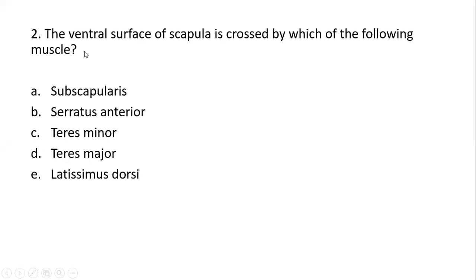The second question related with the scapula is: the ventral surface of the scapula is crossed by which of the following muscles? In this question you need to pay attention to the attachments over the ventral and dorsal surfaces of the scapula. The ventral surface of the scapula is also called the anterior surface as well as the costal surface — it is the surface that faces the thoracic cage or thoracic wall. You need to recall your knowledge of attachments on both the thoracic wall and the scapula, especially its ventral surface.